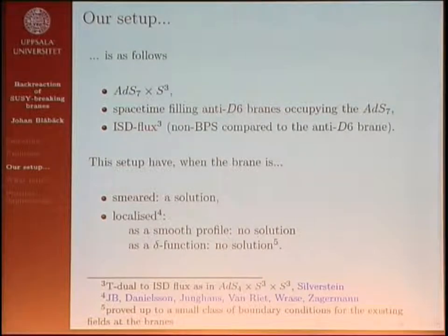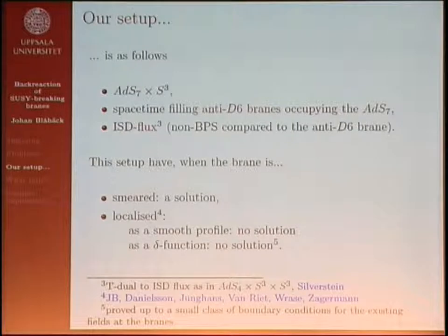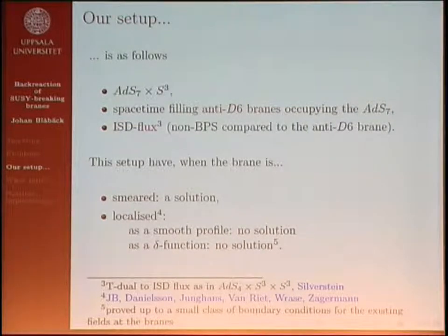We are able to find smeared solutions. But when we look at the localized case — first considering a smooth profile where the source has some width — there is no solution. We also look at the delta function and again find no solution. We have a topological-like argument for why there is no solution, building on some boundary conditions; for all realistic boundary conditions, there is no solution.